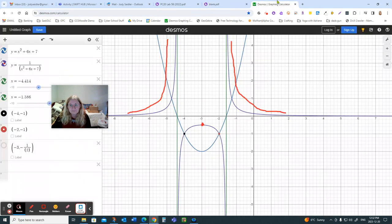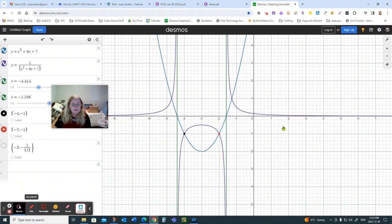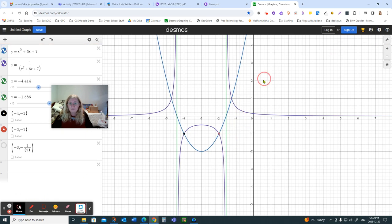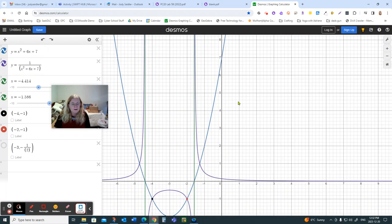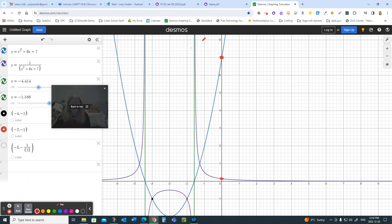So, my old y-intercept for the blue curve, my y-intercept was, here we go, it was 7. There was my y-intercept. On my reciprocal function, it's at 1/7. Because it's just 1 over that function to get the new y-value.